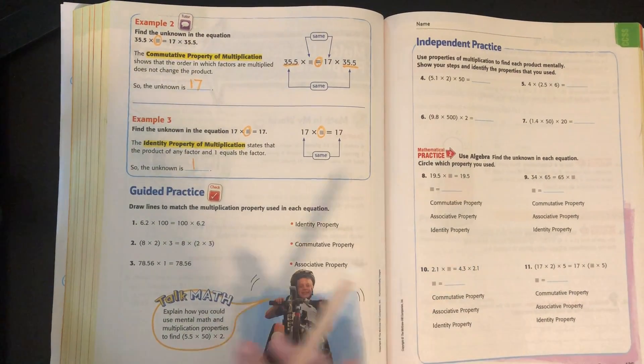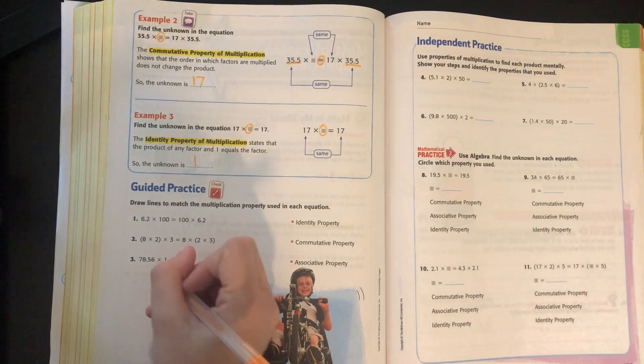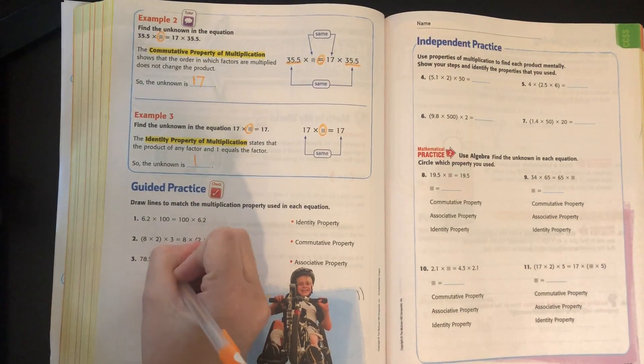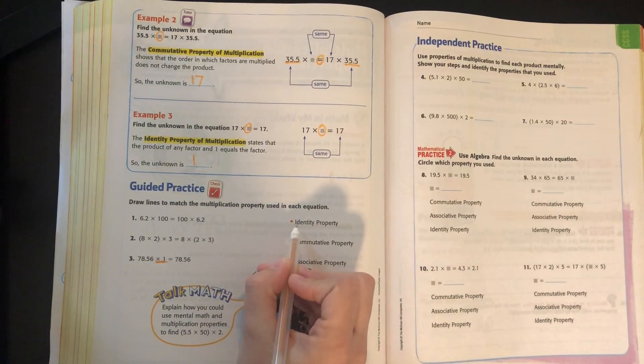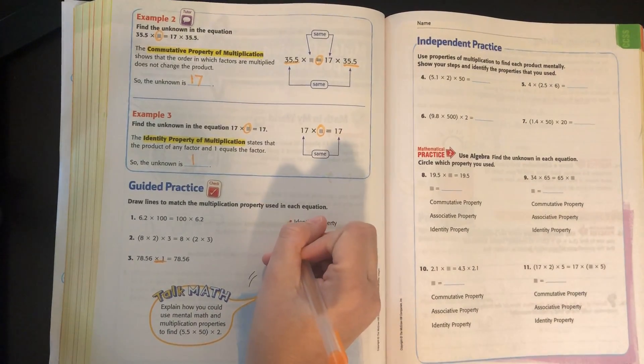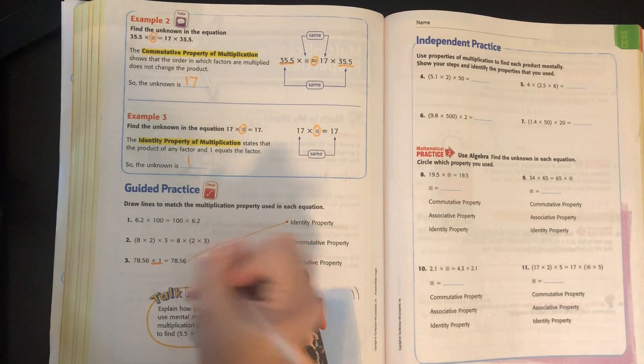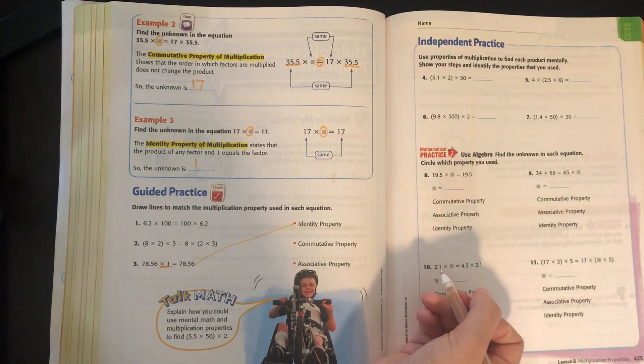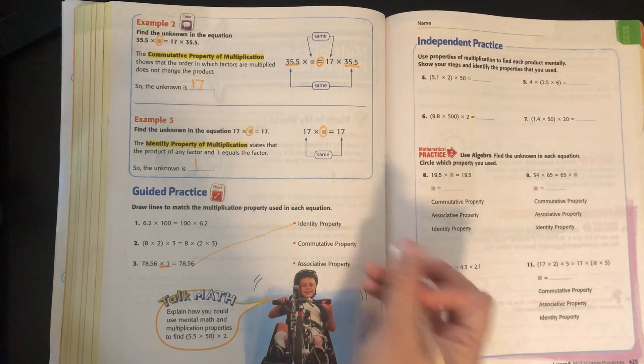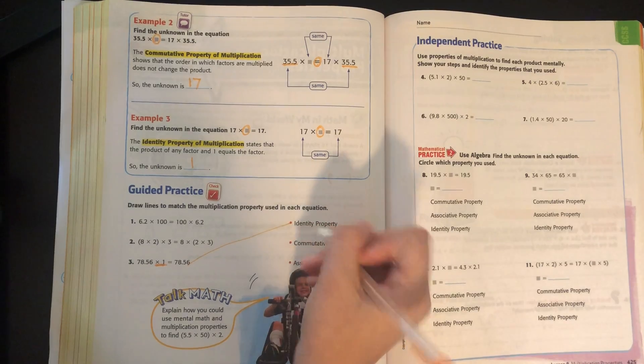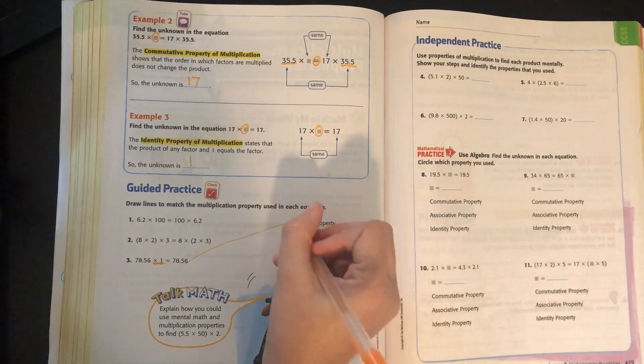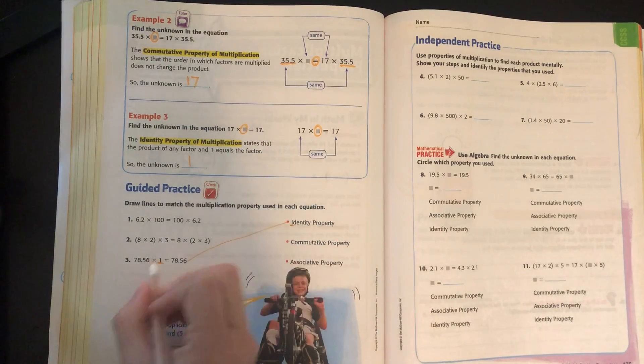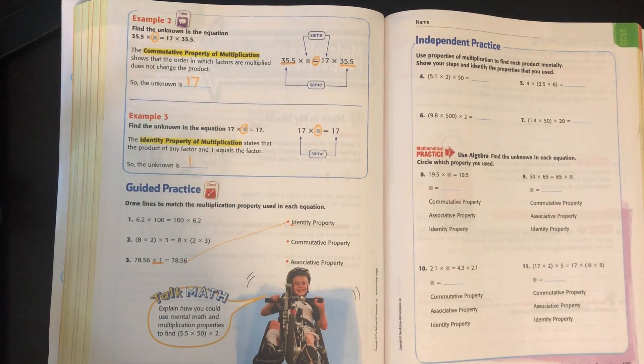So I can look at these right away. And I see that this one, number 3, has something times 1, which tells me that it has to be identity. So one of the ways that I remember identity is, first of all, identity is self. So it makes it into itself. But also, I kind of looks like a 1. So that helps me too.